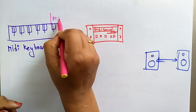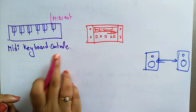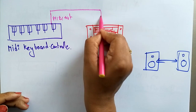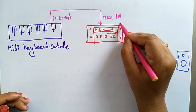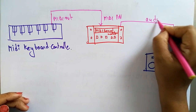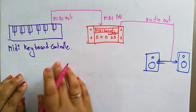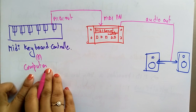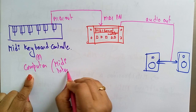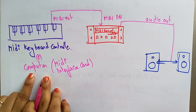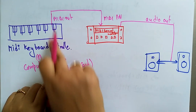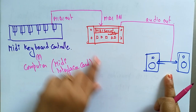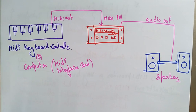The MIDI keyboard controller has a MIDI Out pin, which is connected to the MIDI In of the MIDI sound module. Then the audio out is connected to the speakers. You can also use a computer with an installed MIDI interface card — connect the MIDI Out pin to the computer, which connects to the sound module, and the audio out appears on the speakers.